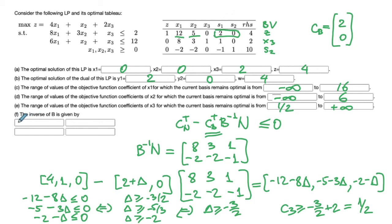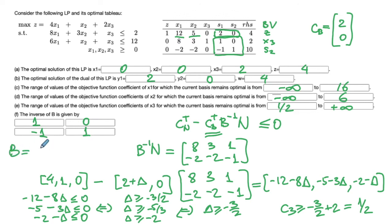Finally, part f asks for the inverse of B. B^{-1} can be read from the columns corresponding to the slack variables in the tableau, provided the row ordering matches. Since x3 comes before s2, the order is correct. Reading those columns gives B^{-1} = [[1, 0], [-1, 1]]. We can verify this by multiplying B (column for x3 is (1,1) and for s2 is (0,1)) by this matrix and confirming we get the identity matrix.